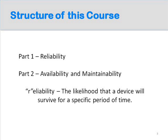The following definitions are useful in distinguishing the different elements of RAM. Reliability is the likelihood that a device will survive for a specific period of time. Availability is a measure of the portion of total time a device will be able to perform its intended function. Maintainability is a measure of your ability to respond to failure and, in doing so, restore the inherent reliability of an asset in a reasonable amount of time. These characteristics are interrelated — for example, improvements to the reliability of an asset will also improve the availability.